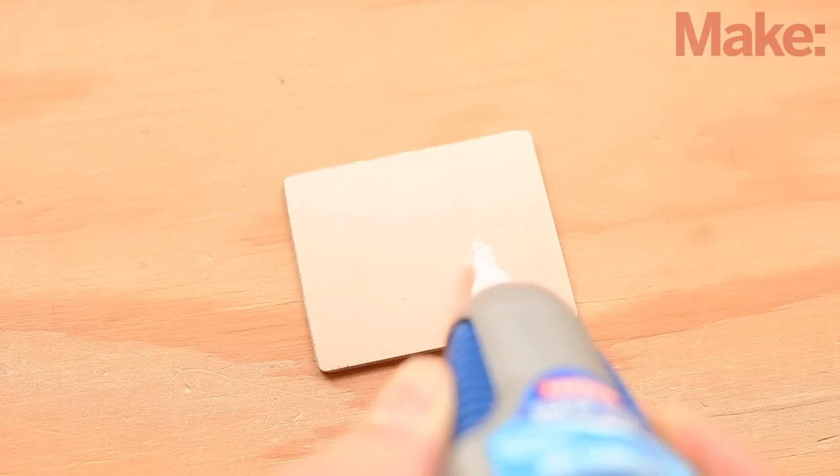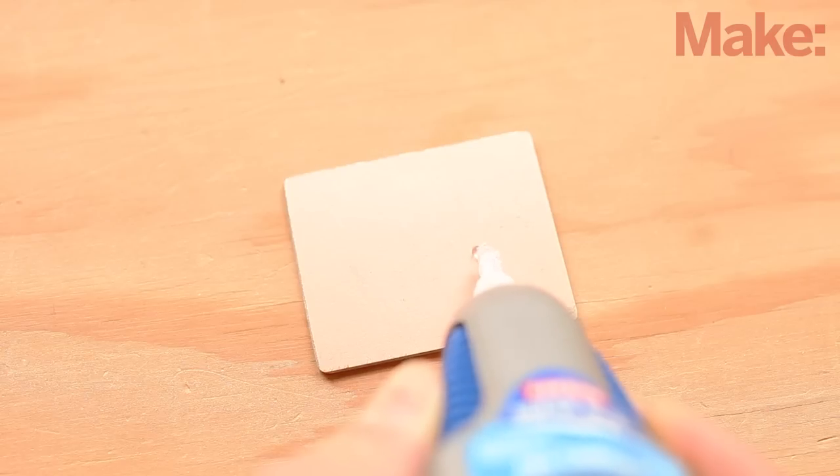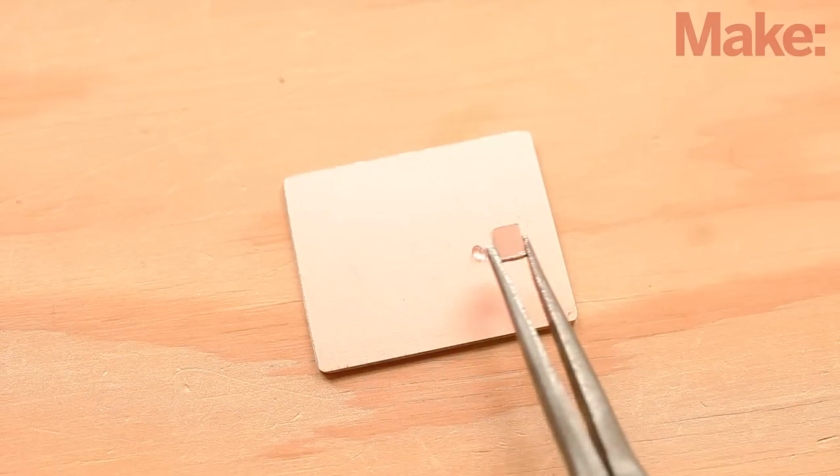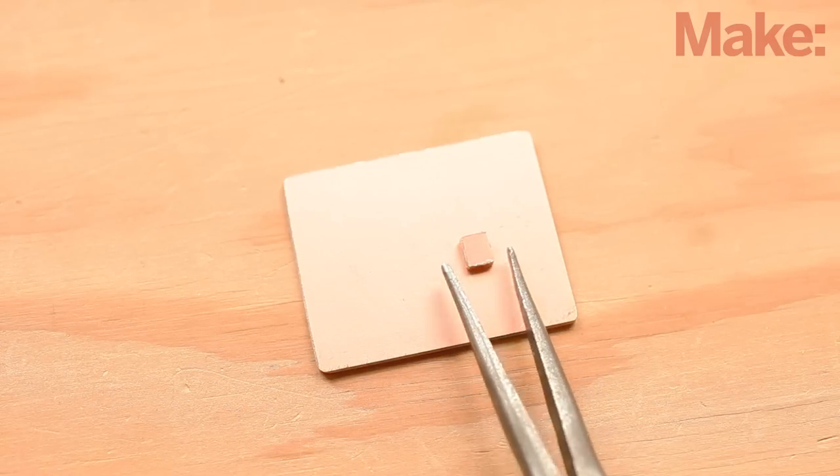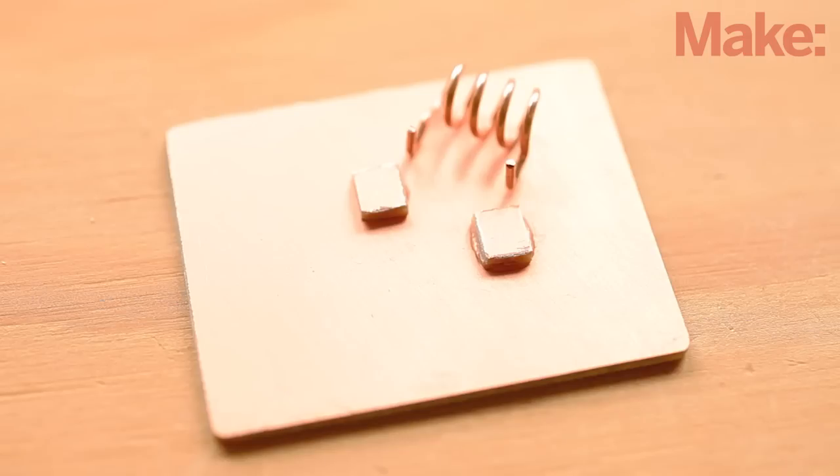We'll start building the circuit by mounting the coil. Apply a small drop of glue to the underside of one of the pads. Use tweezers or small pliers to carefully position it near the center of the ground plane. Now glue a second pad to the board as shown.